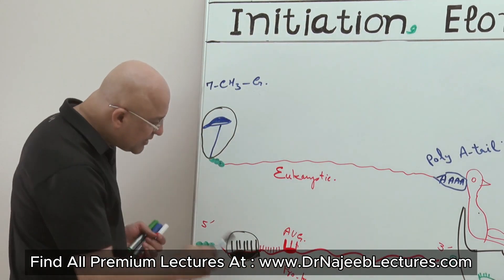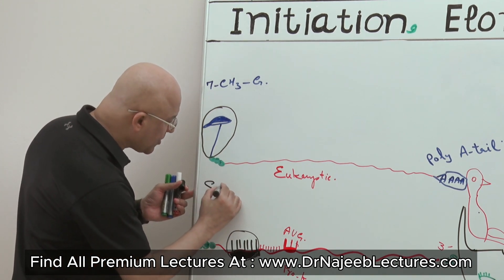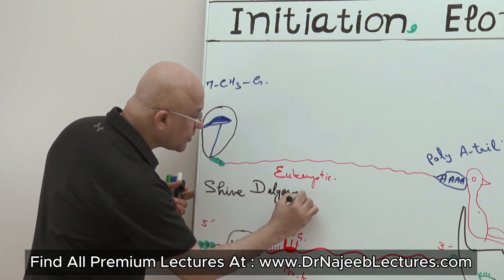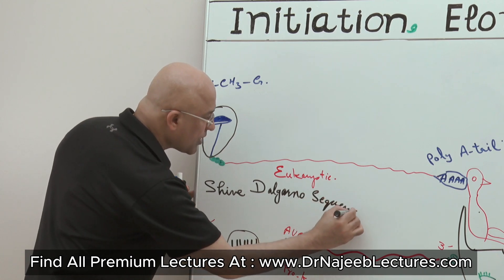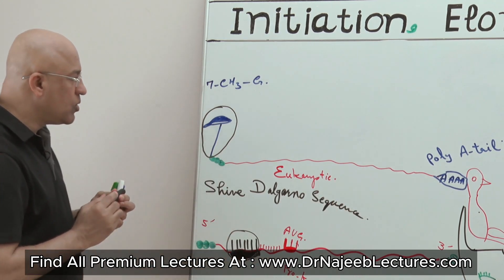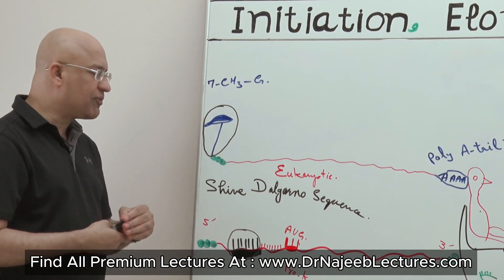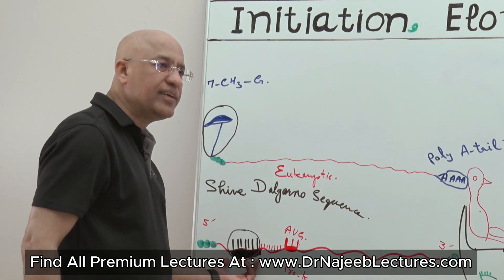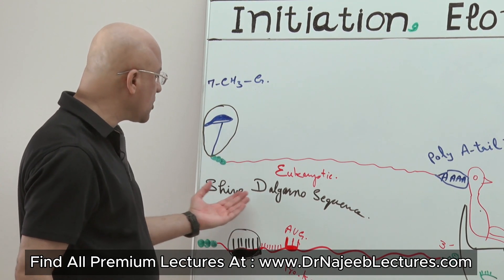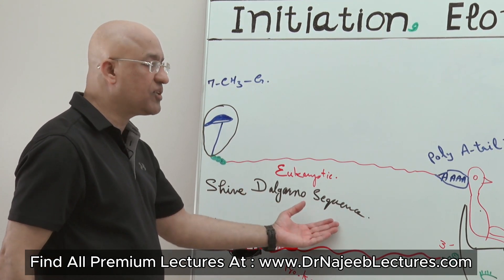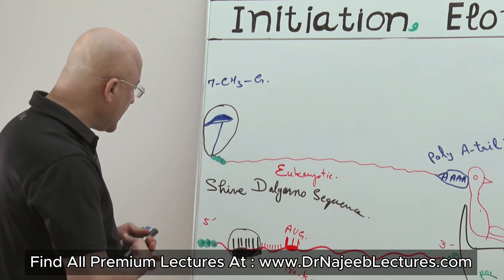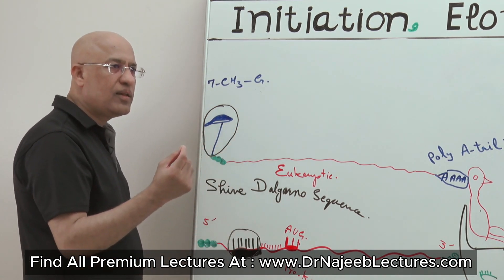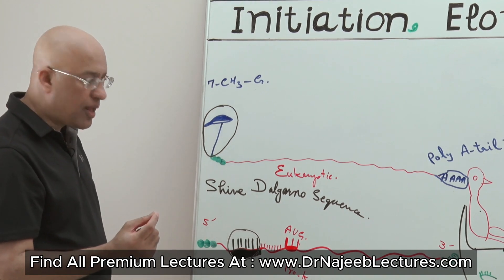This area is called the Shine-Dalgarno sequence. This name is a little unusual — it is taken from the researchers who first discovered this sequence and its function. One was Mr. Shine and the other was Dalgarno; 'sequence' is just the descriptor, not a third person.